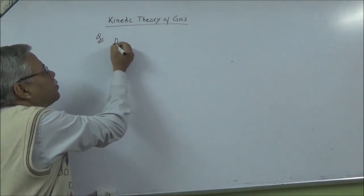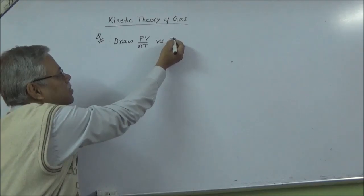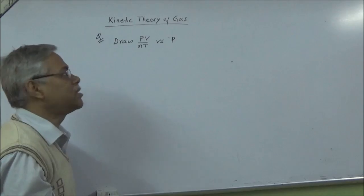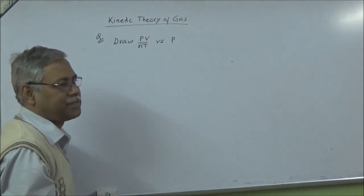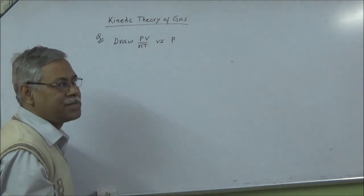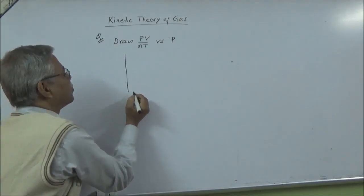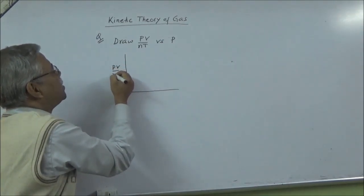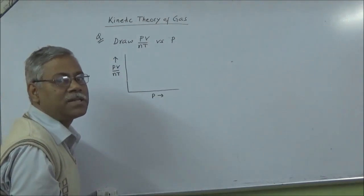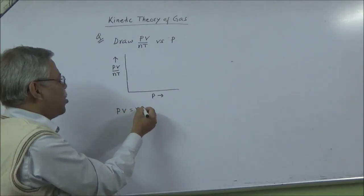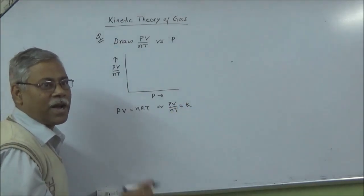Draw PV/nT versus P for real gas and also for ideal gas. First consider an ideal gas. For an ideal gas PV = nT, so PV/nT = R, which is a constant.